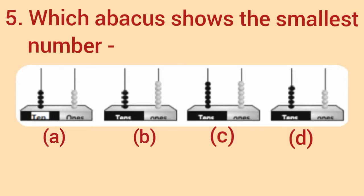Next sum is, which Abacus shows the smallest number? First of all, let us see one's rod of Abacus A. There are 4 beads. And how many beads are there in 10's rod? Yes, 4 beads. So, Abacus A shows the number 44.